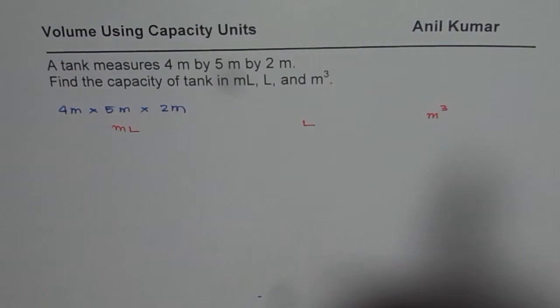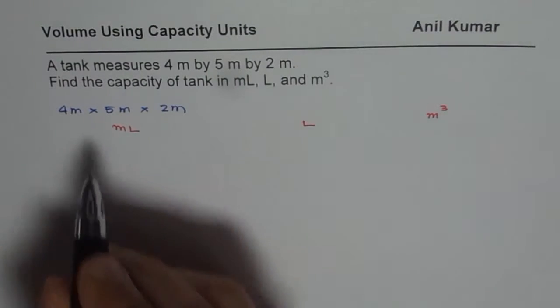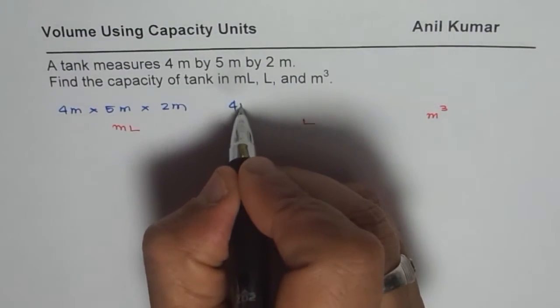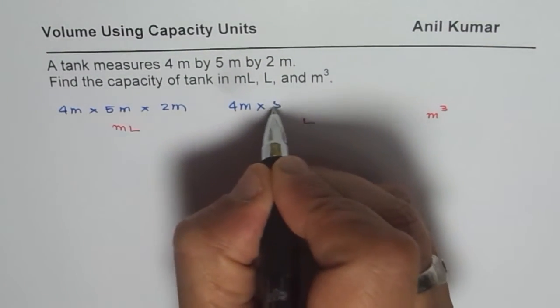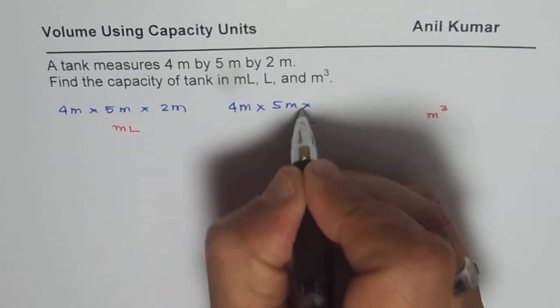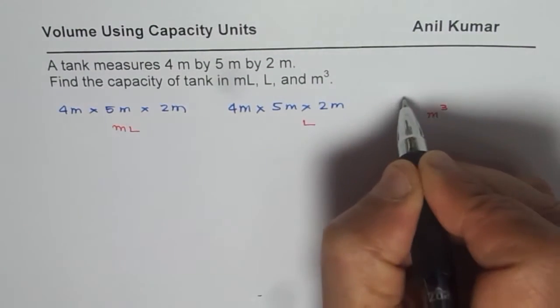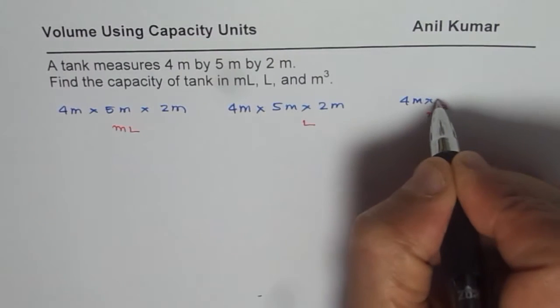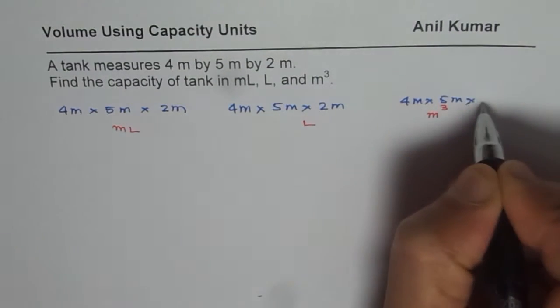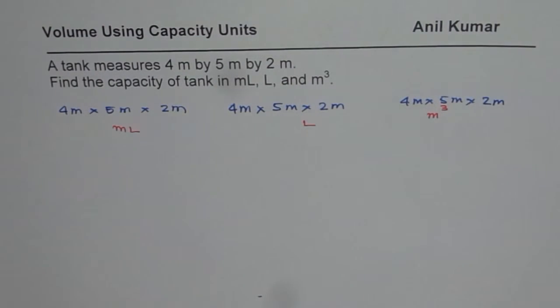These are the three different calculations to be done. I will rewrite this question in these three columns. We will have 2 meters and the same thing here. Of course, each volume is going to be exactly the same. The only thing is, the units are going to be different. Let us try to solve them one by one.